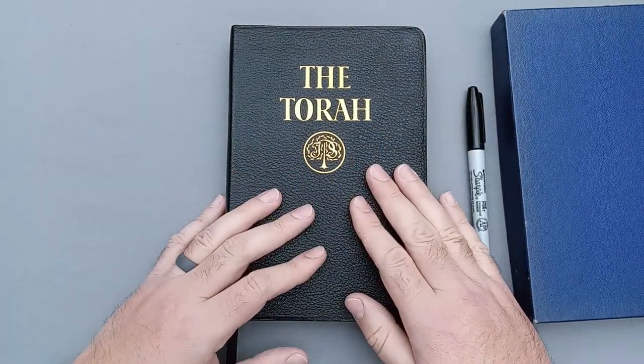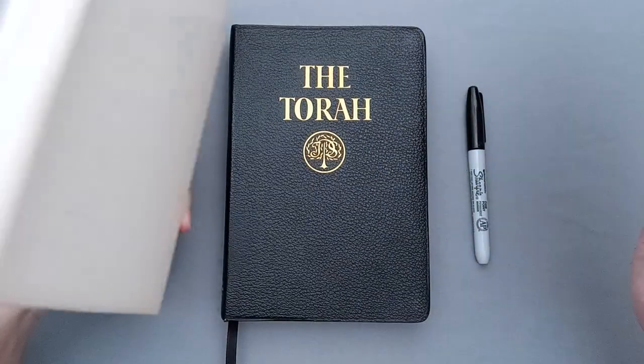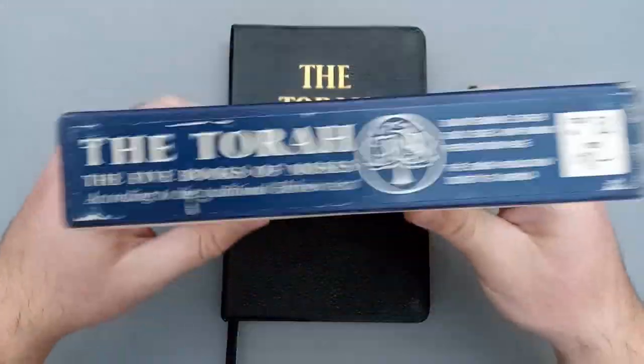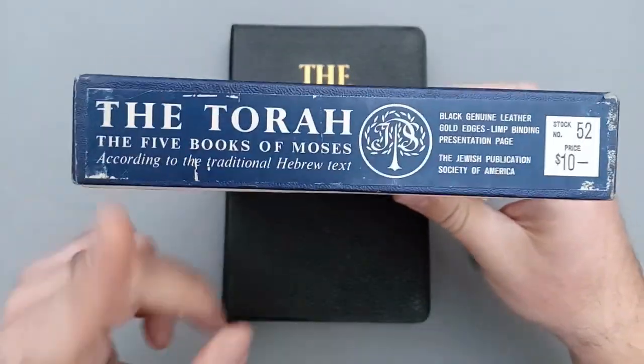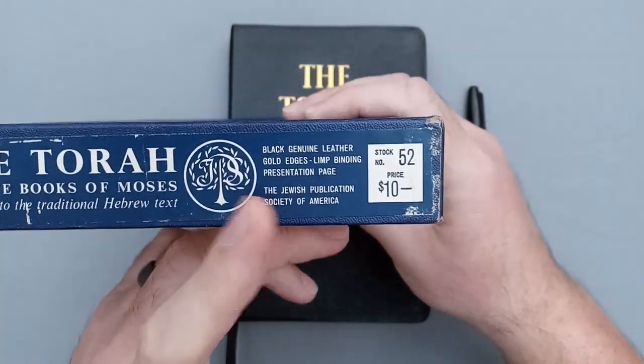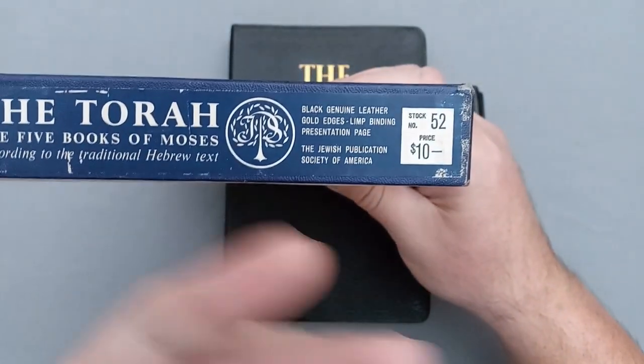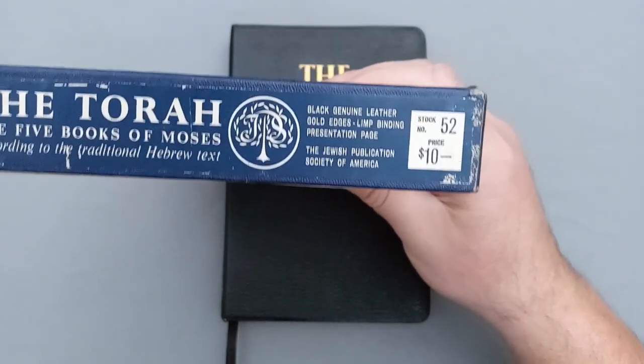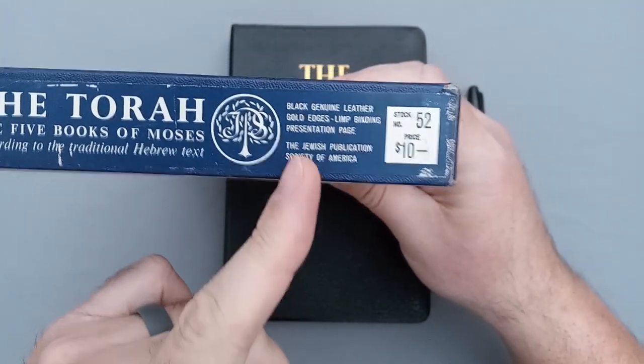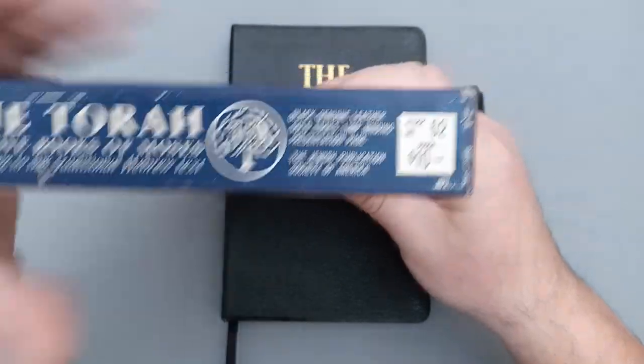Let's go ahead and get into it. We'll start by looking at the box first. It's a very plain blue textured box, a two-piece box with a white plain deal in the back. There's no stickers or anything on it except on the front here. It says The Torah: The Five Books of Moses According to the Traditional Hebrew Text. It is black genuine leather with gold edges, limp binding, a presentation page, produced by the Jewish Publication Society of America, also known as JPS.